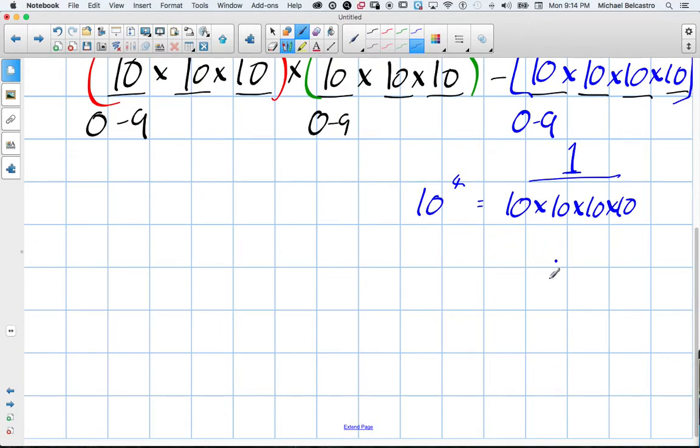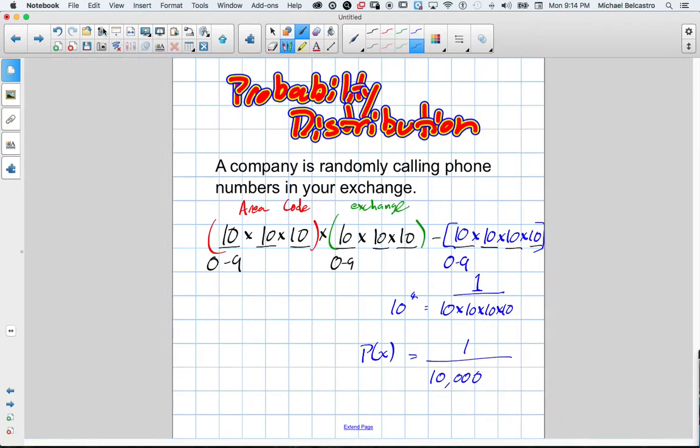This is how we calculate our denominator, which is the equivalent of ten to the power of four. So what's the probability that they land on yours? Well, ten to the power of four, or ten times itself four times, is 10,000. So the probability that they will randomly land on your number is a one in 10,000 chance.